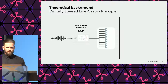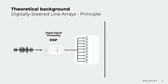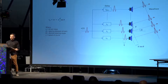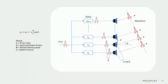Another approach to controlling the main lobe is not mechanical steering, but using a flat line array with a digital signal processing stage — also called a DSP stage — between the signal input and the line array. This is also known as digital beam steering. Zooming into the required DSP, we can steer the main lobe to a given direction theta by applying a calculated delay to each loudspeaker in the array. The delay for each channel is calculated using a formula dependent on the distance between loudspeakers and the desired steering angle.